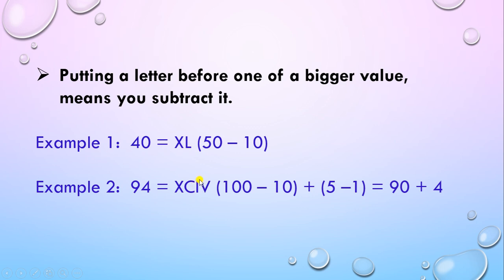And I is written before V. The value of I is 1 and the value of V is 5. Whenever we write a smaller value before a bigger value, we need to do subtraction.